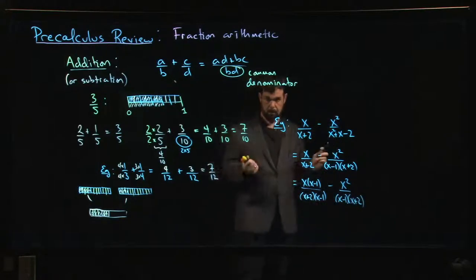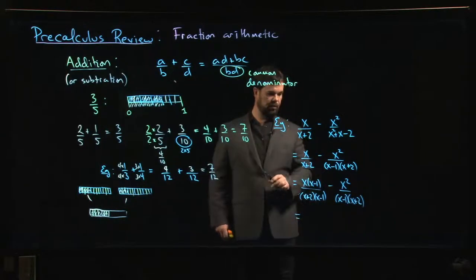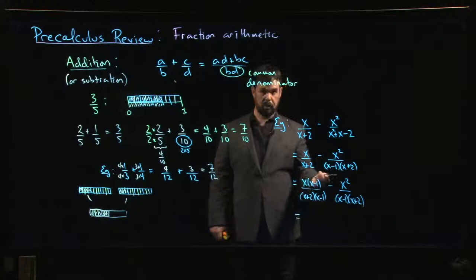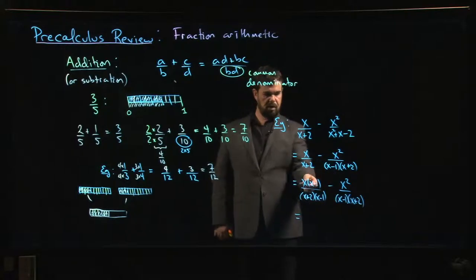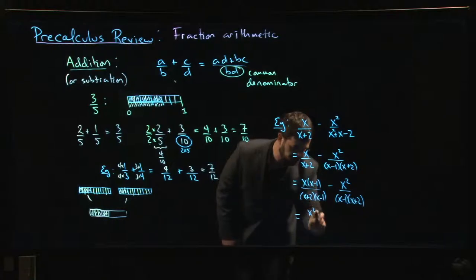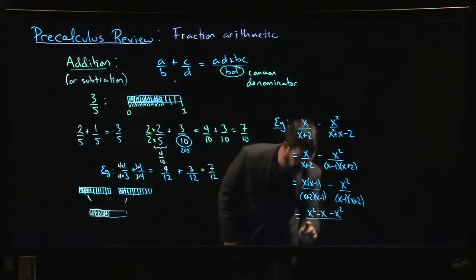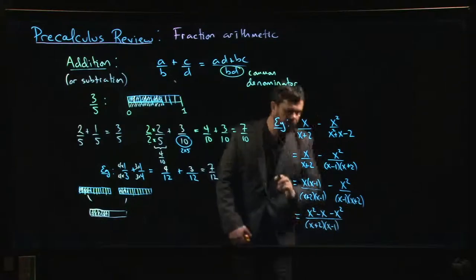Okay, there we go. And now I can put those together. I can write everything over one denominator. If I wanted to, maybe I even multiply this x through. X squared minus x minus x squared.